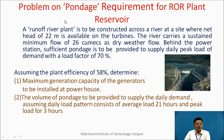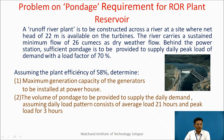Let us take one problem on pondage required for a runoff river plant reservoir. A runoff river plant is to be constructed across a river at a site where a net head of 22 meters is available on the turbines. The river carries a sustained minimum flow of 26 cumecs as dry weather flow. Sufficient pondage is to be provided to supply a daily peak load demand with a load factor of 70%. Assuming plant efficiency of 58%, determine the maximum generation capacity of the generators to be installed at the powerhouse, and the volume of pondage to be provided, assuming a daily demand pattern of average load for 21 hours and peak load for 3 hours.